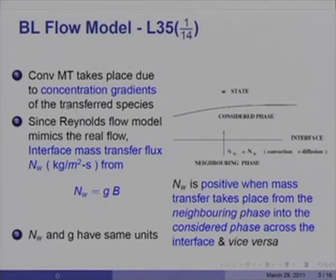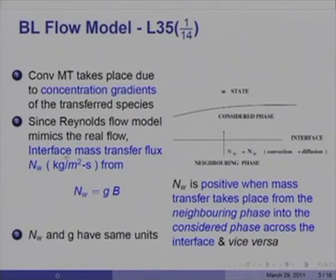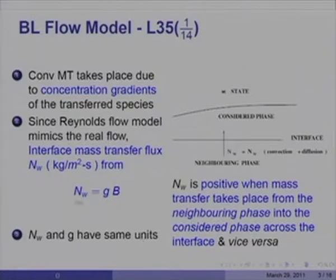Convective mass transfer takes place due to concentration gradients in the considered phase. Since the Reynolds flow model mimics the real flow, the interface mass flux is given by Nw equal to Gb, where Nw and Gb have the same units.